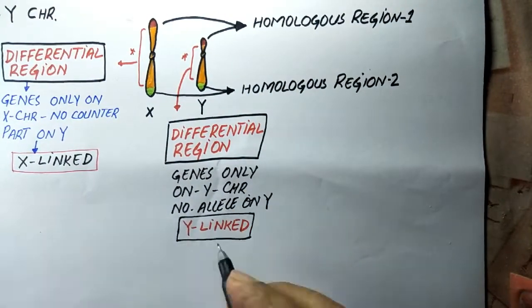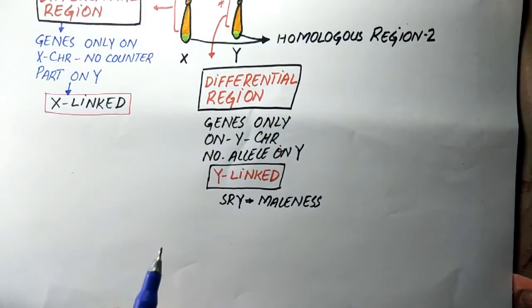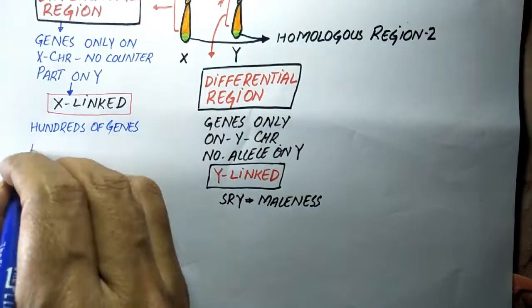There are hundreds of genes on the X chromosome that are not involved in sex processes.